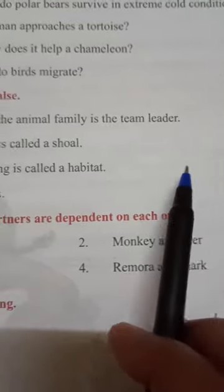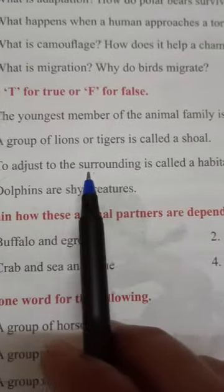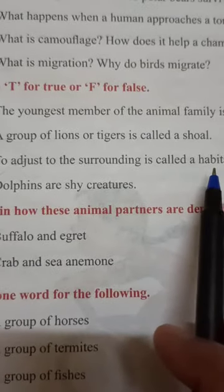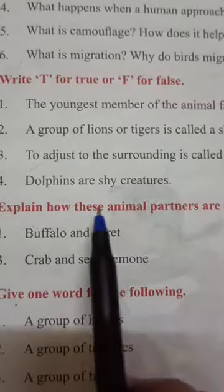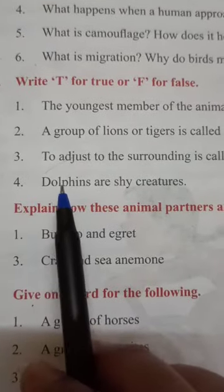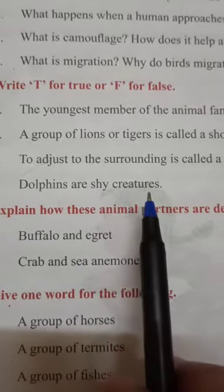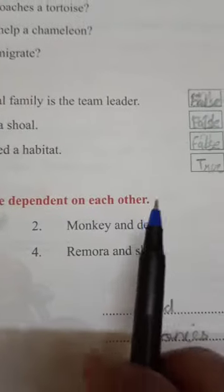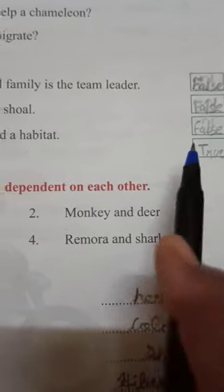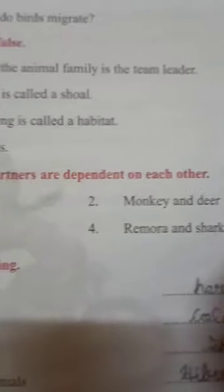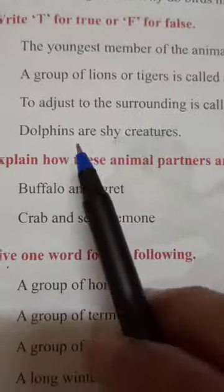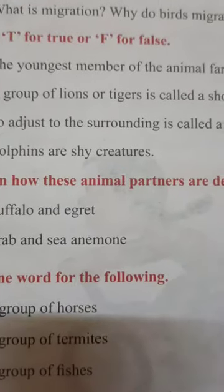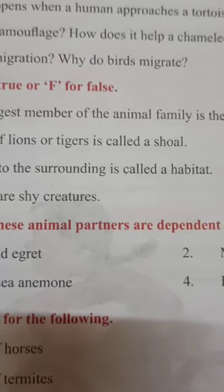Third: to adjust to the surrounding is called a habitat — that is also false, because to adjust according to the surrounding is called adaptation, so it is false. Fourth: dolphins are shy creatures — that is also false, because dolphins are not shy; dolphins are friendly.